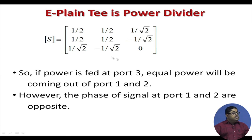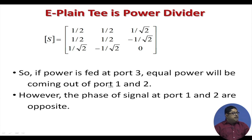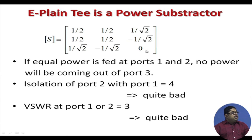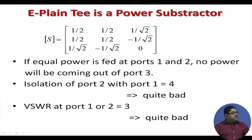If power is fed at port 3, half the power goes to port 1 and half to port 2 — the output signals are in anti-phase (opposite phase). The same device can be used as a power combiner, but due to the anti-phase relationship it acts as a subtractor rather than an adder. If equal power is simultaneously fed at ports 1 and 2, the voltages at port 3 are +1/√2 and −1/√2, which cancel by superposition, giving zero voltage and zero power at port 3.